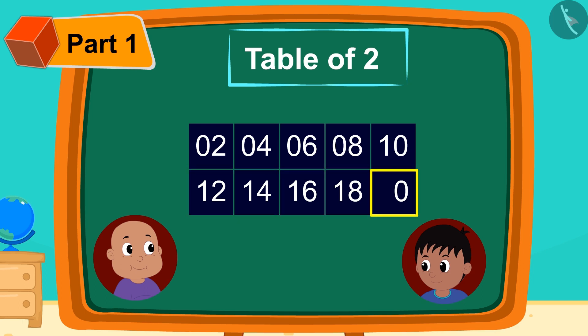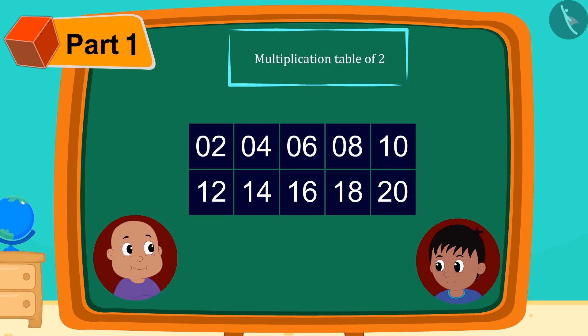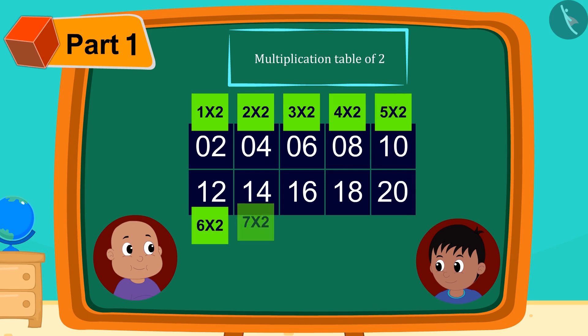And finally, he wrote 2 next to 0. Children, did you see any magic? Yes! And that's a table of 2 right here.